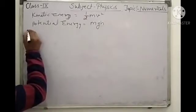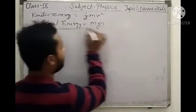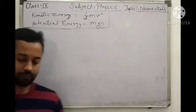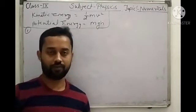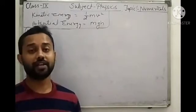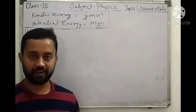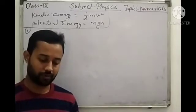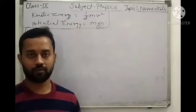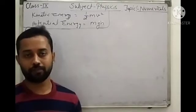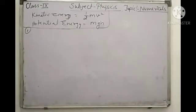I will read the statement and you will understand it. Calculate the kinetic energy of a body of mass 2.5 kg. What do we need to do? We need to find out the kinetic energy. The object has a mass of 2.5 kg, and it is moving with a velocity of 0.2 metres per second.